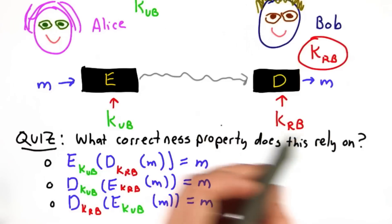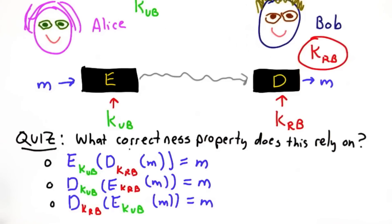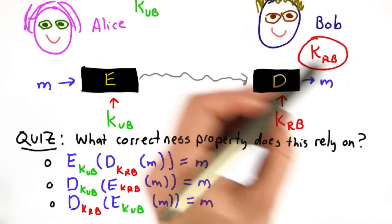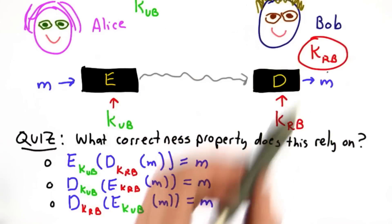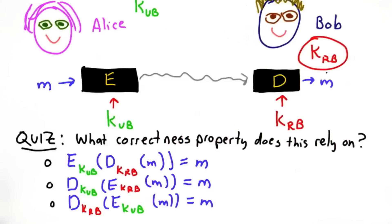What correctness property does this rely on? Here are the three choices — pick the one that this private messaging system is relying on about the E and D functions.